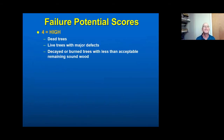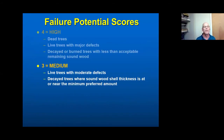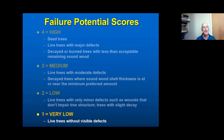Failure potential scores range from one to four. High — a score of four — includes dead trees and trees with major defects. We'll talk about decay and damaged trees, including fire-damaged trees, and we'll do an extensive definition of what we mean by sound wood. Medium level defects would fall around three. Low and very low — under most circumstances those are not going to produce a high hazard tree rating, but you may still want to record them.